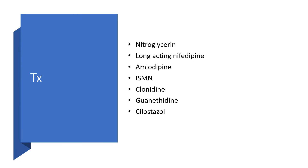How do we treat? Nitroglycerin — but check the blood pressure before administering it, because if the BP is 90/60 or below, please hold the nitroglycerin. Also find out if the person has taken nitrates before; if so, hold nitroglycerin. Then we can make use of long-acting nifedipine, amlodipine, isosorbide mononitrate, clonidine, ranitidine, and cilostazol.